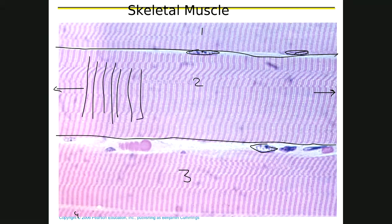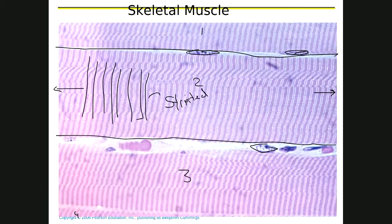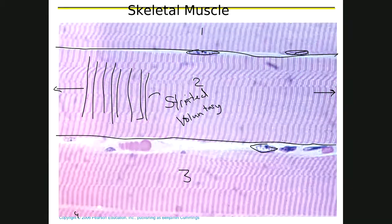The word for striped is striated, so this is striated muscle. This is voluntary, so it produces voluntary movements. Any kind of movements that you choose to do — hands, face, feet, legs — it's got to be skeletal muscle doing that.